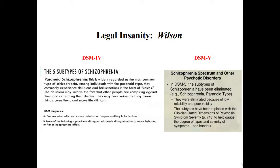In Wilson, the defendant believed the victim was doing him and all of society wrong and thus needed to be eliminated. He killed the victim and then turned himself in to the police, confessing to the killing. At trial the defendant raised an insanity defense, which the jury rejected, resulting in a conviction. On appeal, he argued the trial court improperly instructed the jury as to the meaning of the term 'wrongfulness' in the jurisdiction's insanity statute.